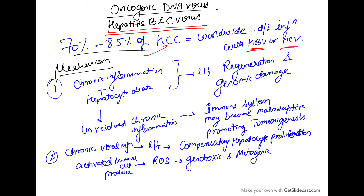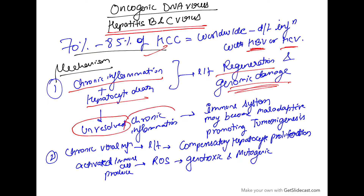Now, what is the mechanism of carcinogenesis? Because they are infected with Hepatitis B or Hepatitis C, there will be a chronic background inflammation and there will be hepatocyte death. This will lead to regeneration of hepatocytes, and also there will be some genomic damage because of the constant cycle of death and regeneration.